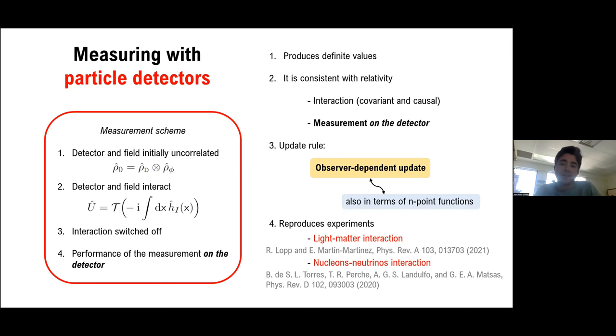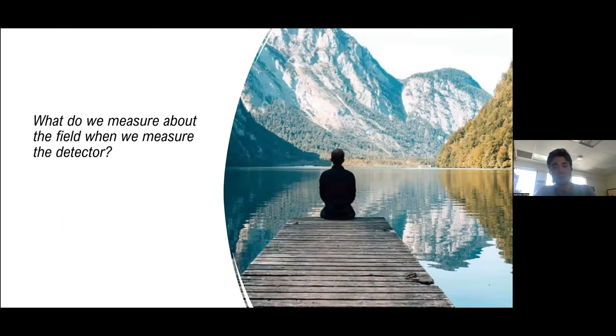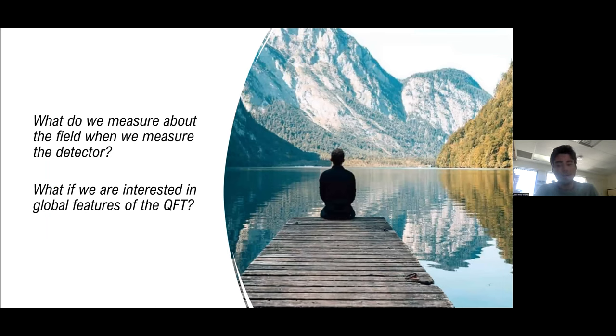So this at least tells us that with particle detectors we know how to poke the field consistently, but we are left with the question of what exactly are we measuring about the field when we measure the detector. Also, since our probes are local, as any reasonable measurement model should be, we are also left with the question of what happens if we are interested in global features of the QFT. Can we figure those out?